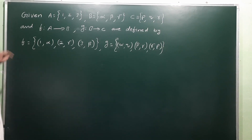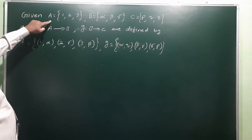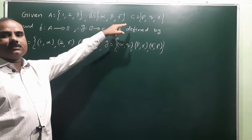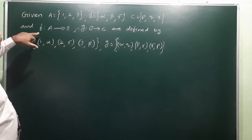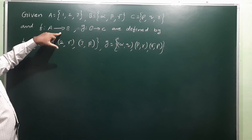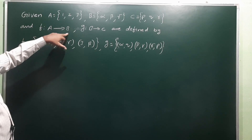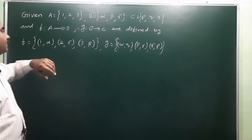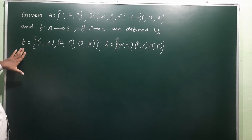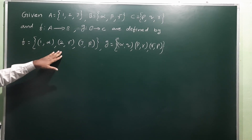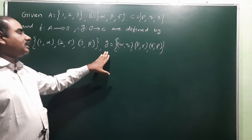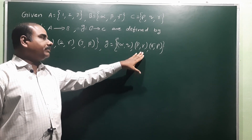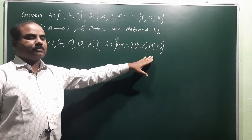Next problem: given A = {1, 2, 3}, B = {alpha, beta, gamma}, C = {p, q, r}. f is a function from A to B, g is a function from B to C. They are defined as f = {(1, alpha), (2, gamma), (3, beta)} and g = {(alpha, q), (beta, r), (gamma, p)}.